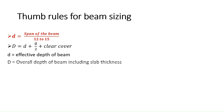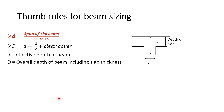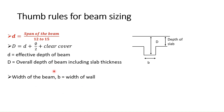Please note that the overall depth of the beam includes slab thickness as shown in this figure. The width of the beam can be considered as equal to the width of the wall. We generally consider width of the beam as 230 mm, which is approximately 9 inches.